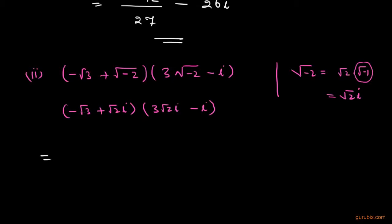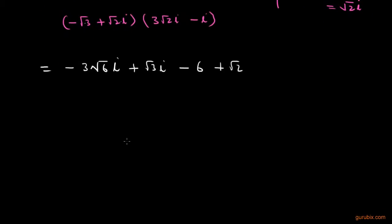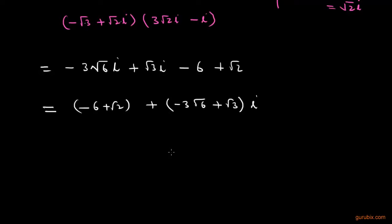Now we multiply these values. Negative root 3 multiplied by 3 root 2 iota gives negative 3 root 6 iota; multiplying the next pair gives positive 3 root 3 iota squared; another product gives negative 6; and the last gives positive root 2. Collecting terms, we get: minus 6 plus root 2, plus the imaginary part negative 3 root 6 plus root 3 times iota. This is the standard form of the second part.